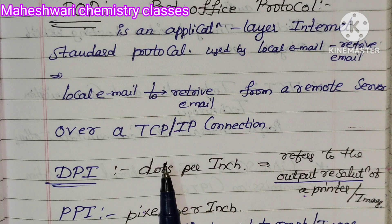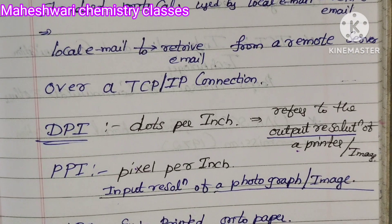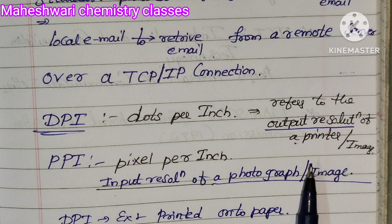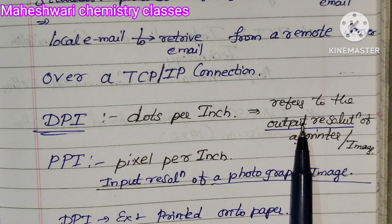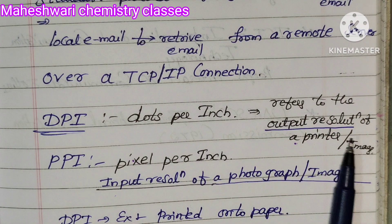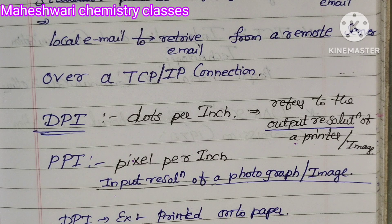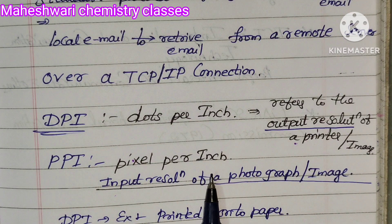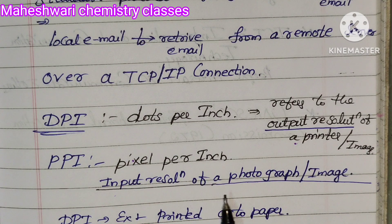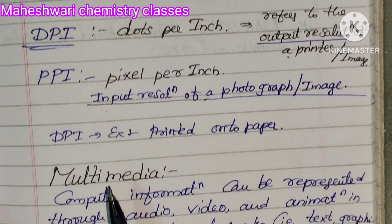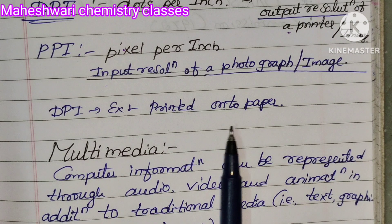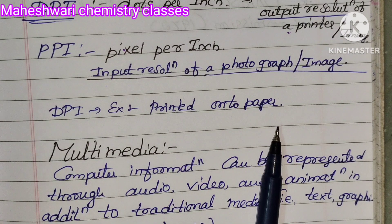DPI — Dots Per Inch — refers to the output resolution of a printer. PPI — Pixels Per Inch — refers to the input resolution of a photograph or image. DPI applies, for example, when printing onto paper.